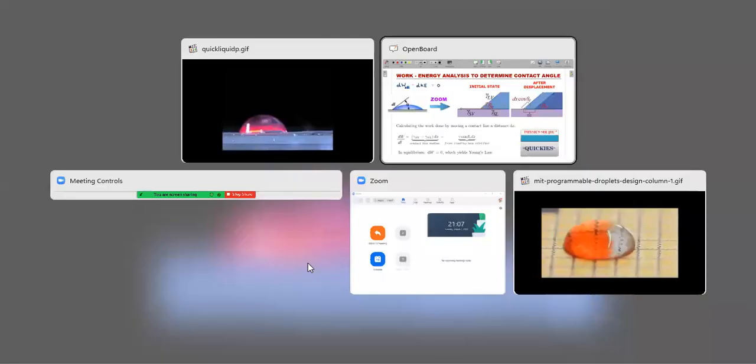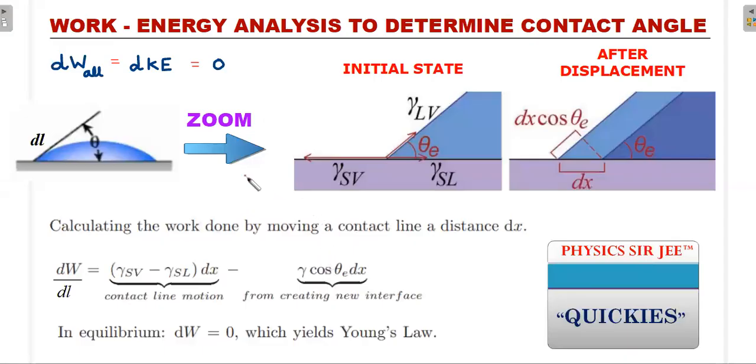So imagine this particular point which moved in that particular video stops at a position. So this is the initial state, and once the movement starts, this point, let's say, moves towards left by a dx length. There is a dl distance which is into the board, and there is a dx displacement towards left of this point. So this is the initial state. So after the displacement, this point had moved by a distance dx.